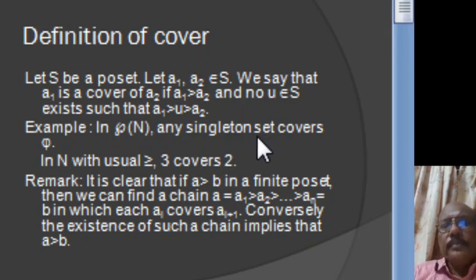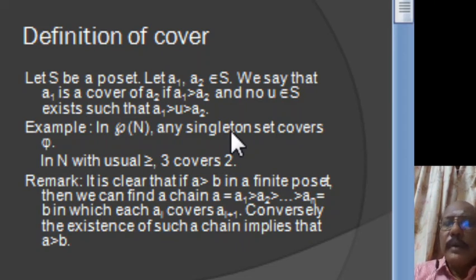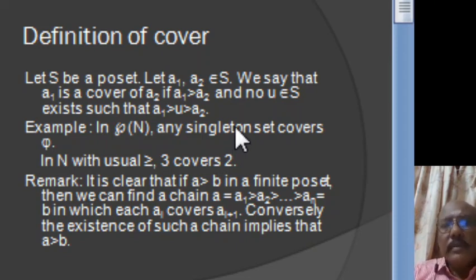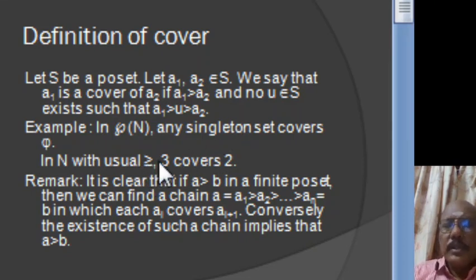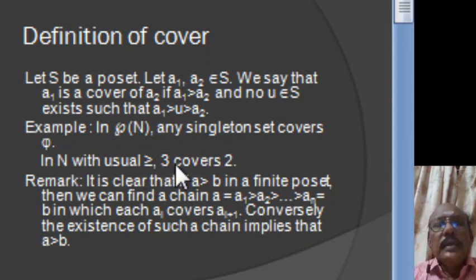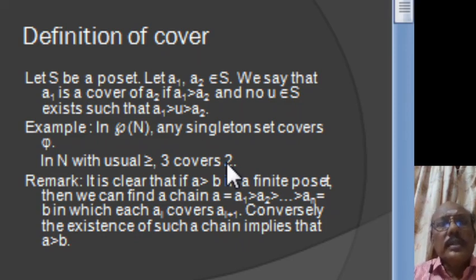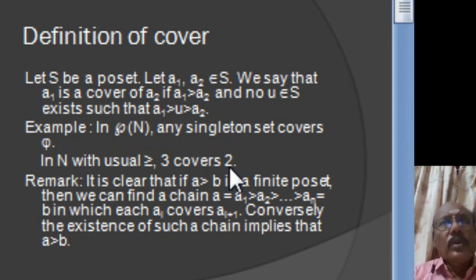But the set {1, 2} is not a cover for the empty set, because in between the set {1,2} and the empty set, we can insert the singleton {1}. So {1,2} is not a cover for the empty set. In N with the usual ≥ relation, 3 covers 2 because 3 > 2 and there is no integer between 3 and 2. So 3 is a cover for 2. But 4 is not a cover for 2 — even though 4 > 2, there exists an integer 3 between 4 and 2. So 4 is not a cover for 2.